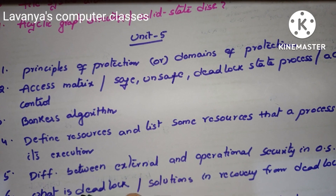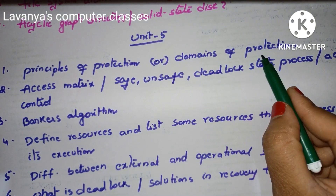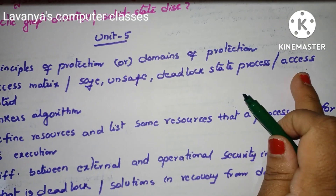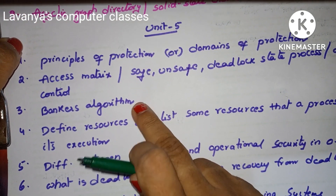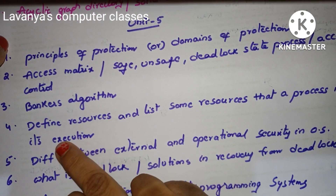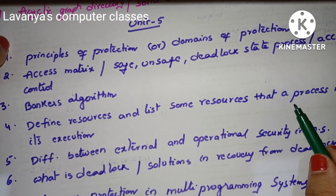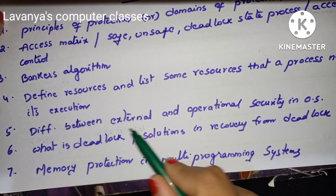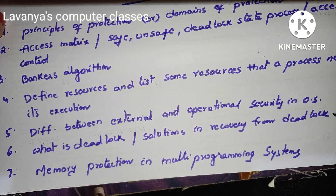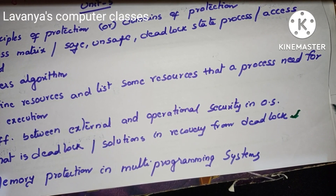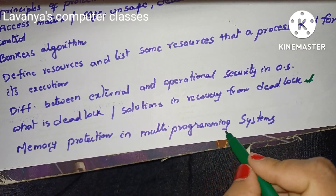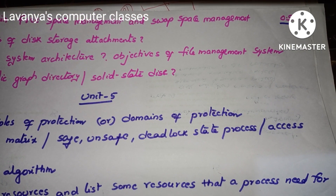Last, unit 5. Explain the principles of protection or domains of protection. Next, access matrix. Explain deadlock state process or access control — important question. Very very important question: banker's algorithm — what is banker's algorithm? Explain banker's algorithm with example. Next, define resources and list some resources that a process needs for its execution. Difference between external and operational security in OS. What is deadlock? Solutions in recovery from deadlock — very very important. DBMS also has the same deadlock techniques, so read there and here. How to avoid deadlock? Memory protection in multi-programming systems.